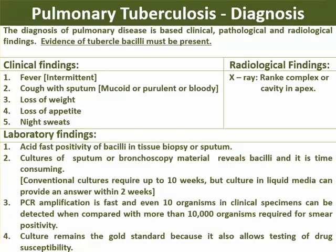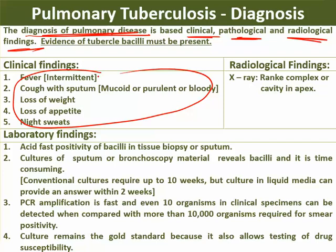The investigations for diagnosis of pulmonary tuberculosis are based on clinical, pathological, and radiological findings. Clinically, there are five characteristic symptoms: fever, cough with sputum, loss of weight, loss of appetite, and night sweats. On X-ray: Ranke's complex or Ghon focus indicates primary TB; a cavity in the apex indicates secondary TB; and small seed-like deposits indicate tertiary TB.